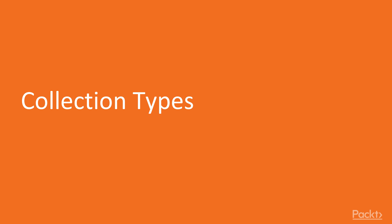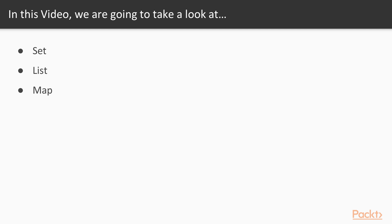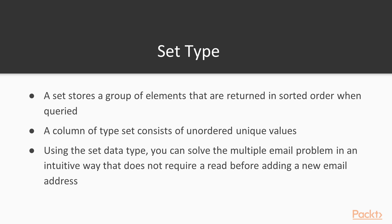First, we will start by looking at collection types. In Cassandra, in the table definition we can use the set data structure, list, or map. A set is a structure that stores a group of elements that are returned in sorted order when queried.